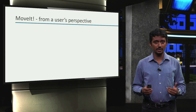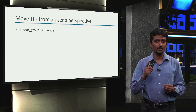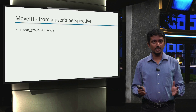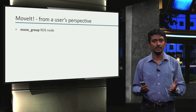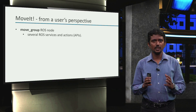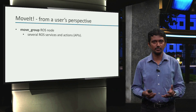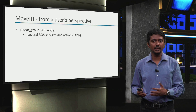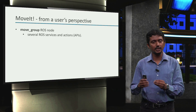That's a lot of work that MoveIt does for us. As a MoveIt user, what we get to see is just one ROS node called the MoveGroup. This is where all the processing and coordination associated with the various steps happens. To use all those functionalities, the MoveGroup node provides us with several ROS service and action APIs that can be used in our specific ROS application. We will look into some of these APIs as we go along in this week.